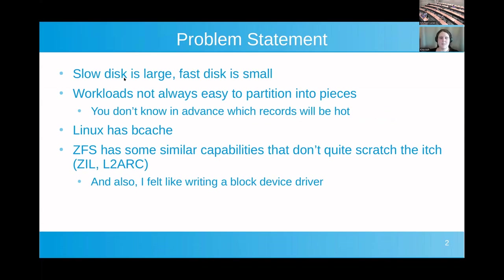The problem is pretty simple. You can buy a 20 terabyte disk these days for like 350 bucks, and it will do a grand total of like 40 IO operations per second, maybe 100 if you're really lucky. On the other hand, we have really astoundingly fast flash, and we have Optane, which is non-flash, which does even higher numbers — but you're going to be paying three to ten times as much per gigabyte. The easy answer is to cut your workload into pieces, put the cold parts on the cold disk and the hot parts on the hot disk. The problem is that in real applications it's not always that obvious, especially in advance.